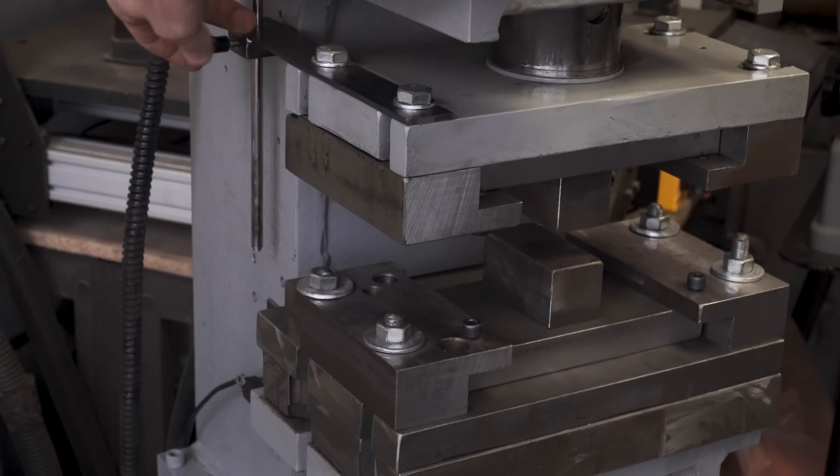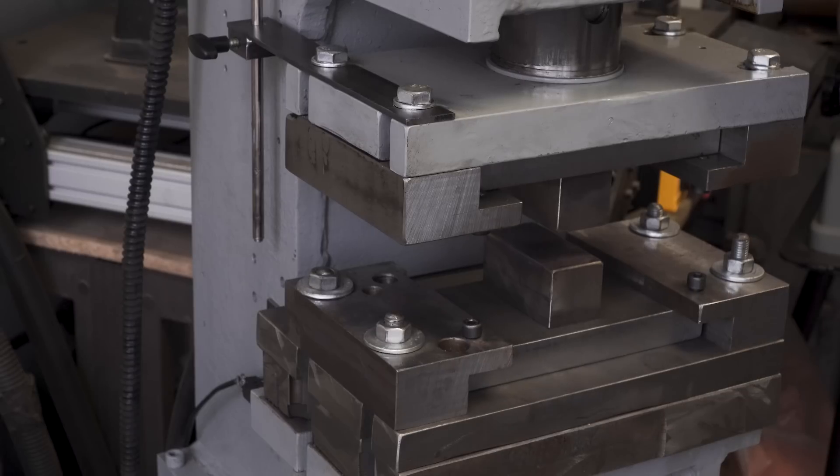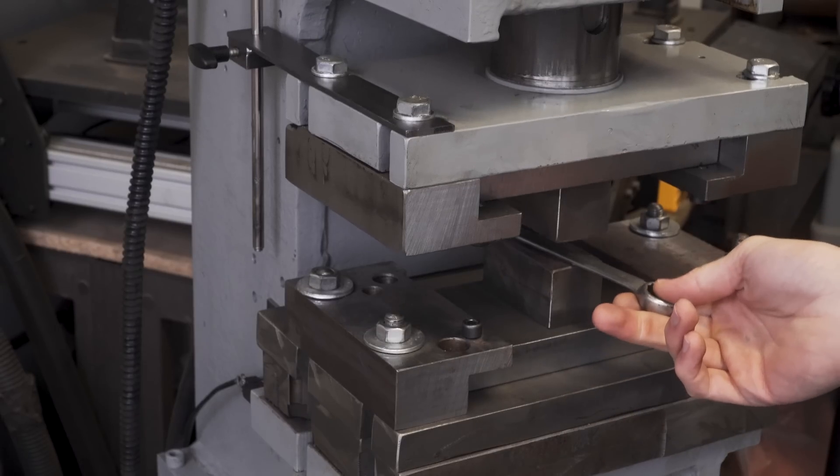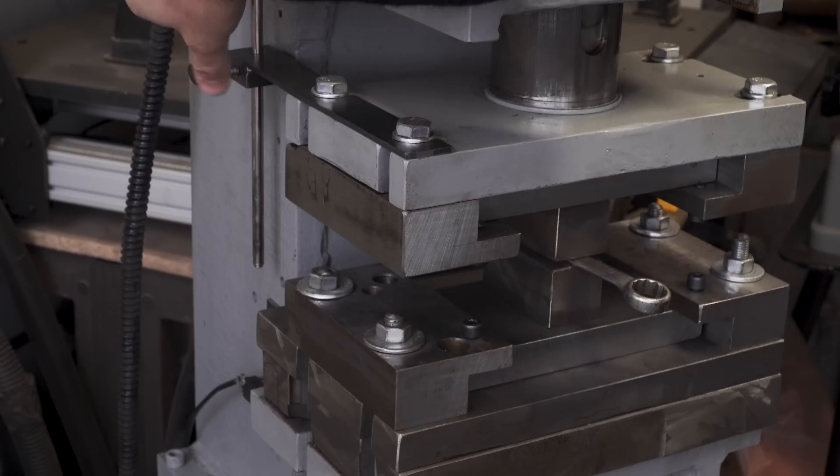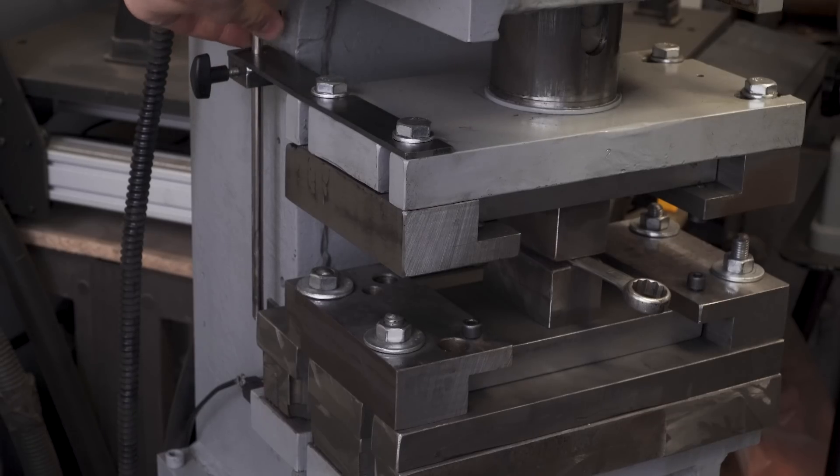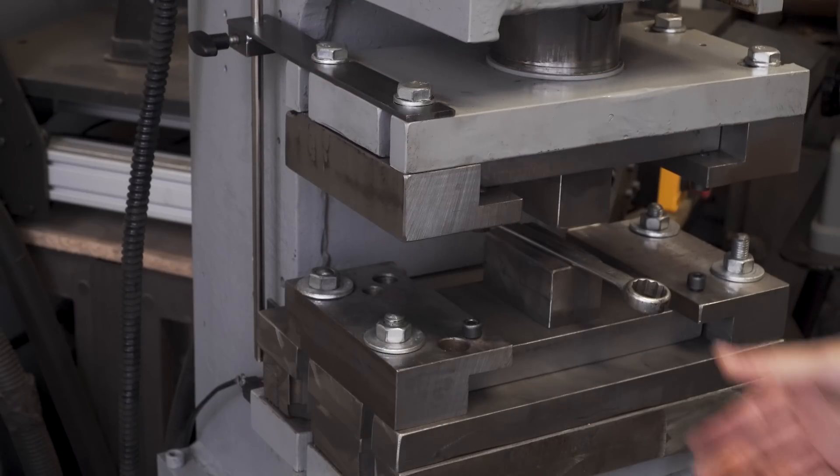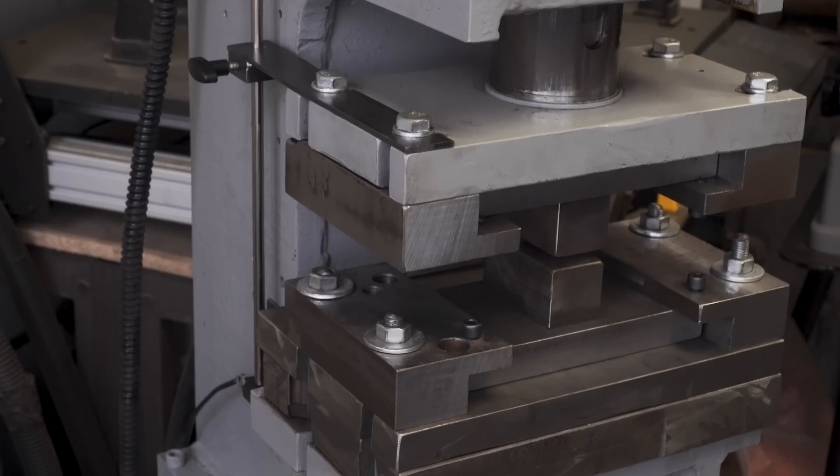And the way I'll be using this is, let's say I want to press to the thickness of this wrench, I can put it between the dies, I can now set the adjustable rod so that it barely pushes on the limit switch. And we should now be able to press down only to that set thickness.